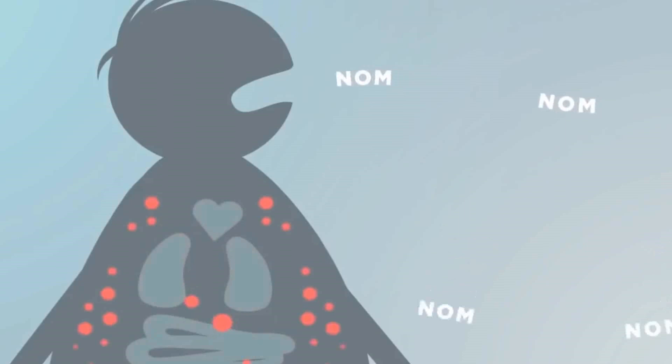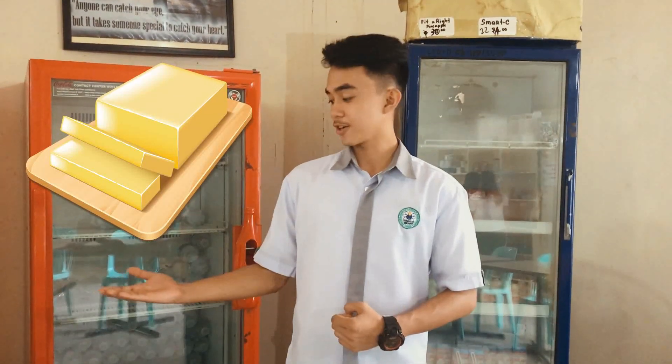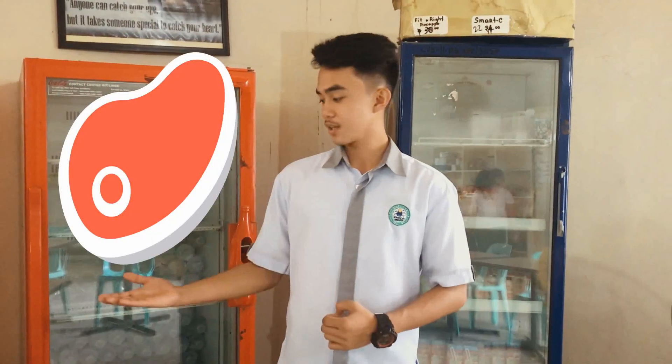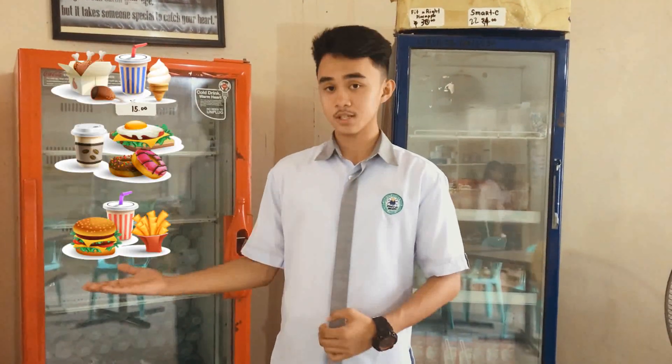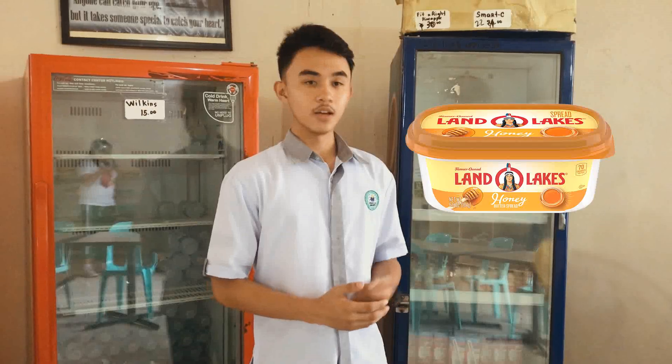Foods that are rich in saturated fats are full-fat milk, butter, meat, and sweet snacks. While foods that are rich in unsaturated fats are skimmed milk drink, spreads, trail mix, and olive oil.